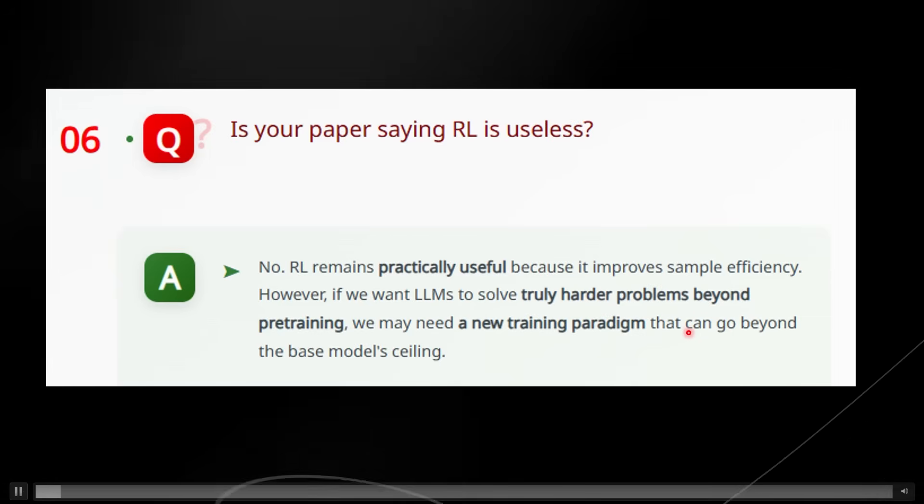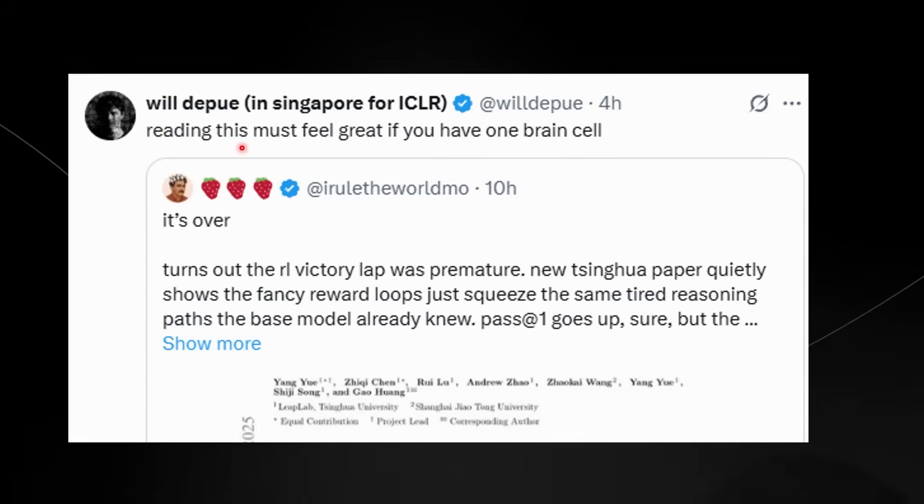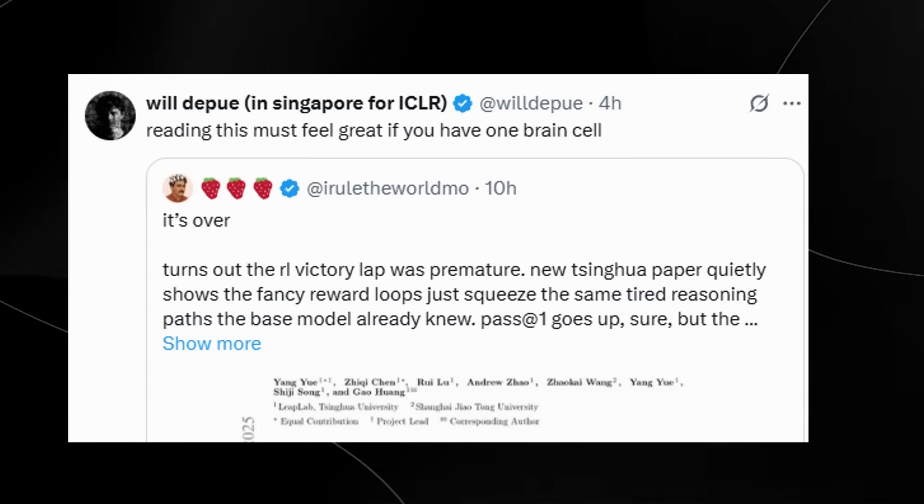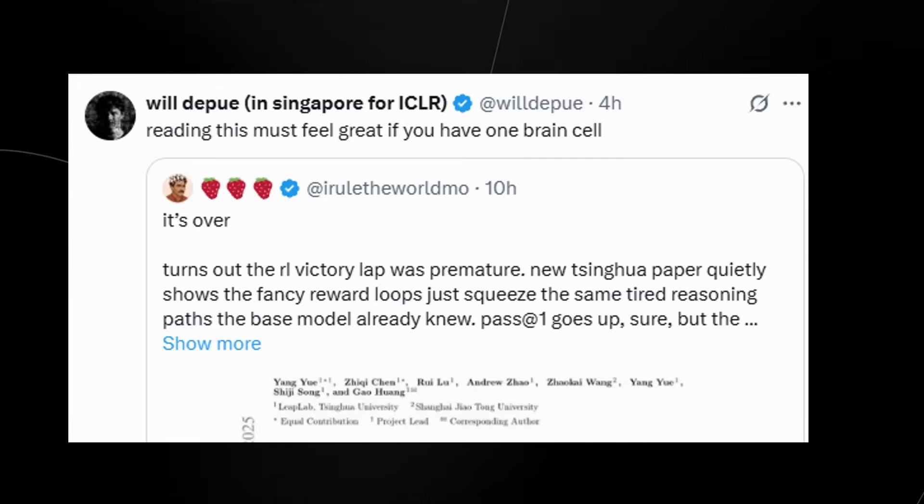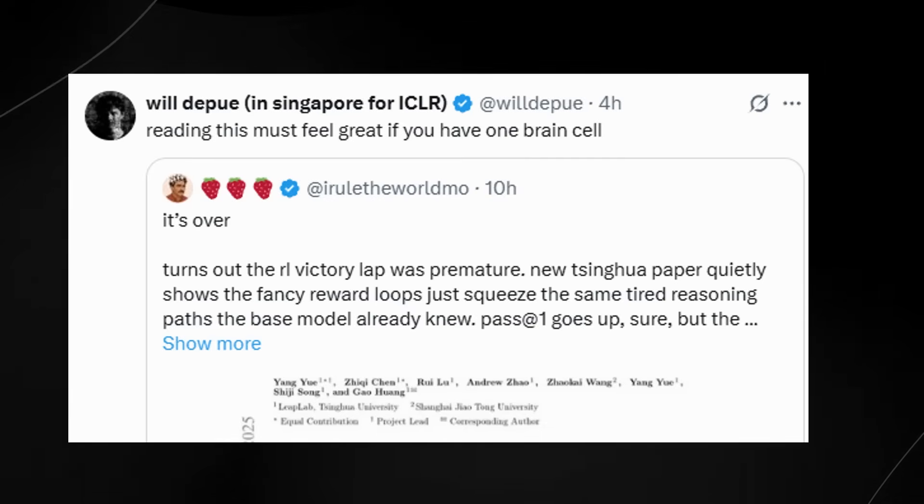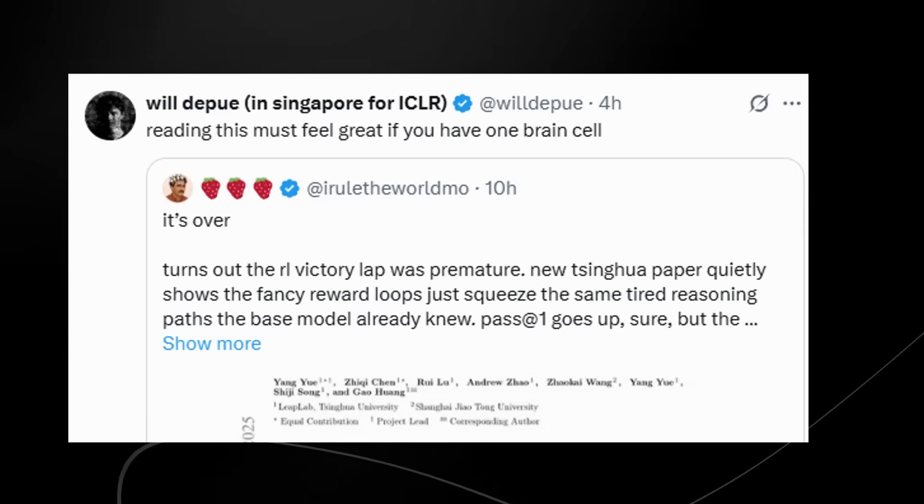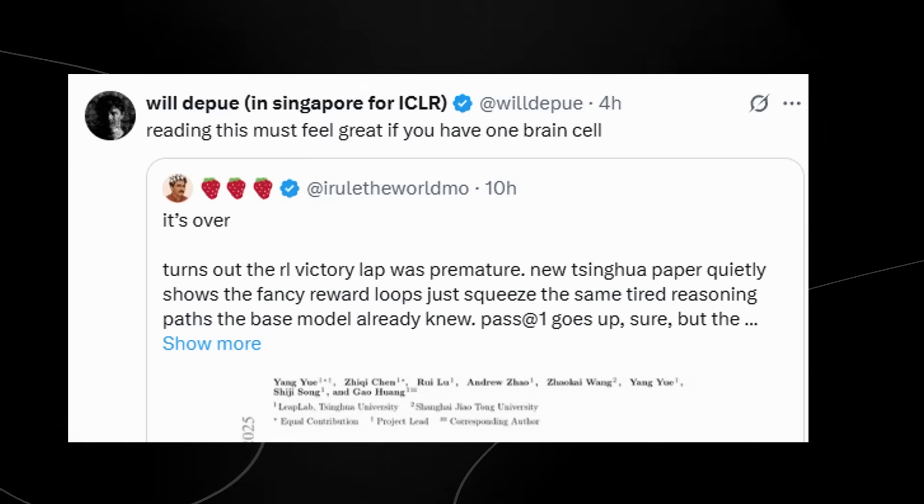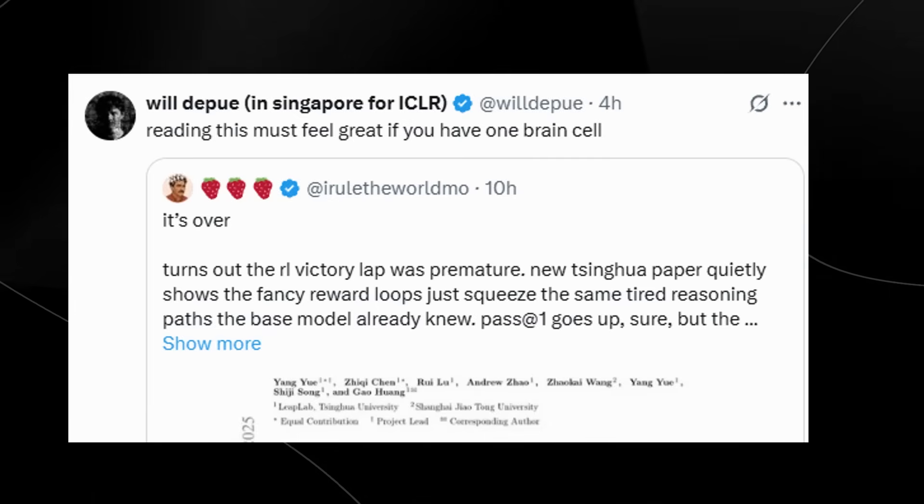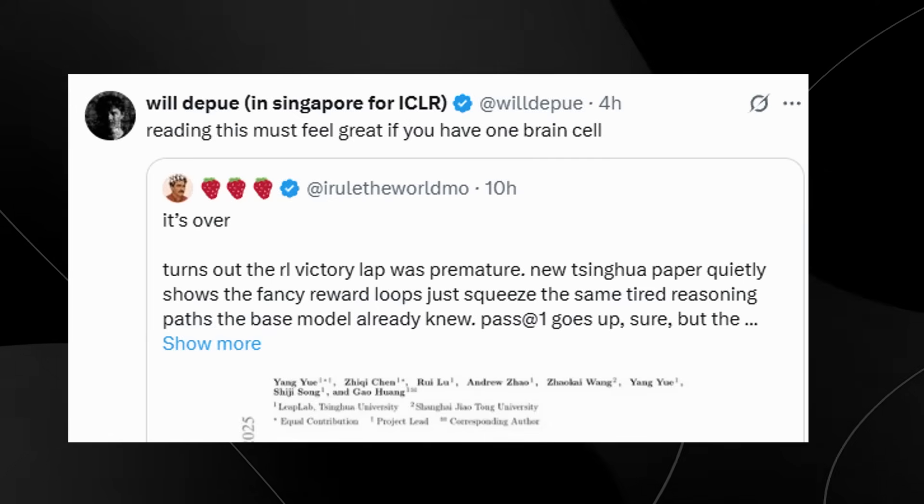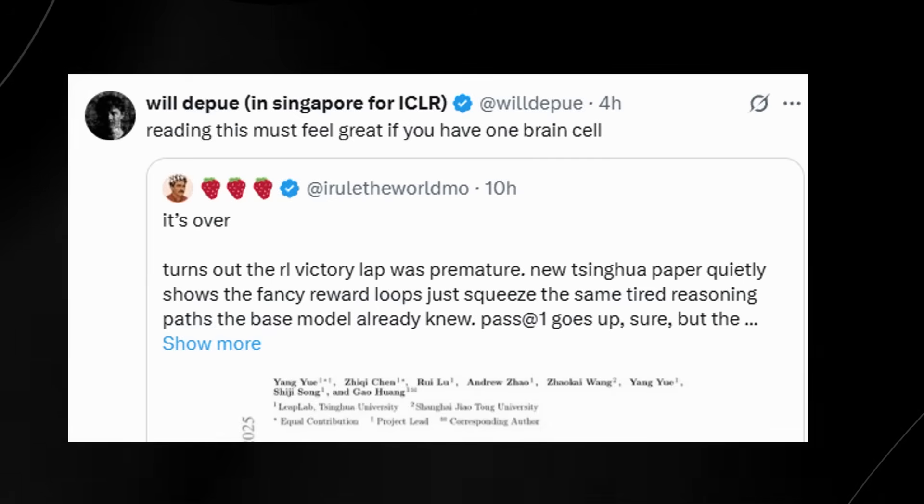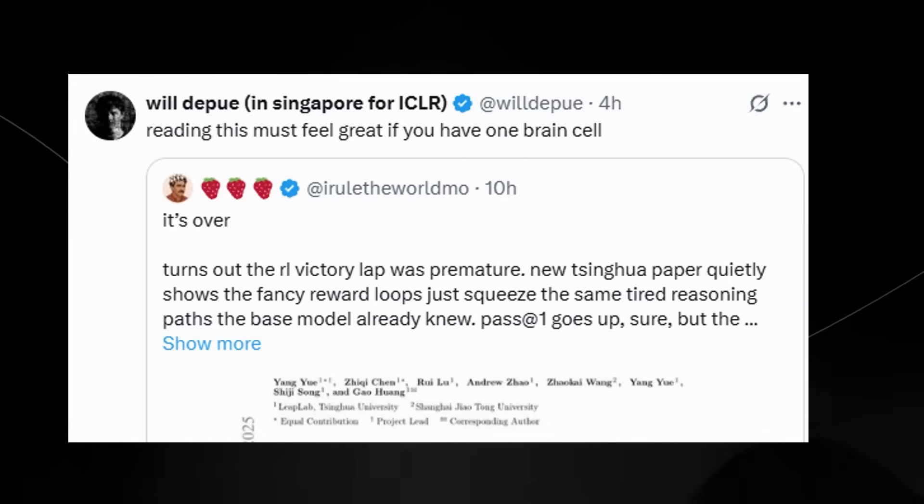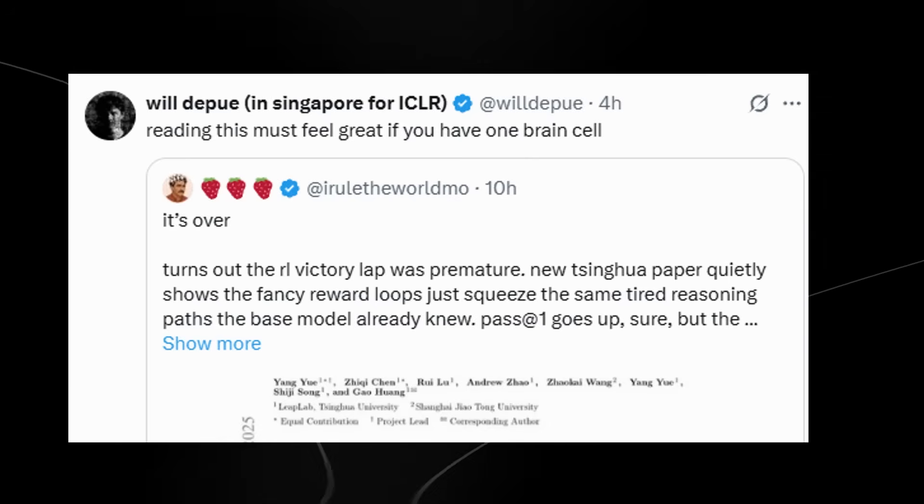Now someone from OpenAI said that reading this must feel great if you have one brain cell. And I don't know, I was thinking about this, and I think in a sense this kind of is interesting. Because when we look at what the model is doing, of course reinforcement learning is great because it helps you get the answer faster, but of course the downside is that it narrows its reasoning paths and eventually might miss some real answers. But in a sense, when we actually think about it in a practical sense, you could argue that the reinforcement learning trained model is smarter in an important way because it's more efficient.